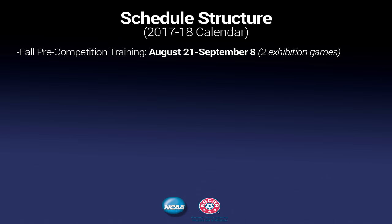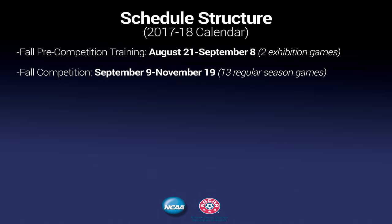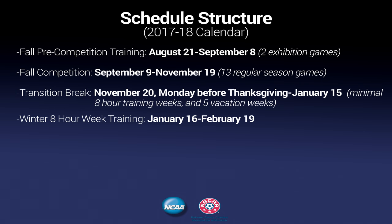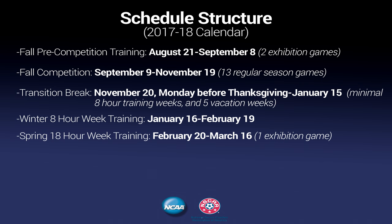As you'll notice, our fall pre-competition training will actually start 11 days later than we currently have. We will also have pre-season go over two and a half weeks versus 12 days. During that time, we'll play two exhibition games. The fall competition will start on September 9th — that's three weeks later than we currently start. We will play 13 regular season games, 11 of those will be on weekends, which we feel will enhance the student athlete experience. Then we will have a transition break — we will stop playing the weekend prior to Thanksgiving and essentially take five weeks off, with minimal eight-hour training weeks during that time period as allowed by NCAA rules. In the winter, we will start up again with an eight-hour week training from mid-January to mid-February, which is similar to what we have right now.